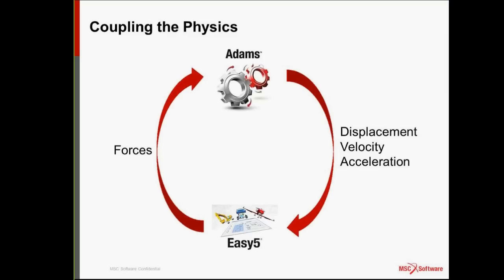Let's talk about the coupling of physics between ADAMS and EZ5. ADAMS takes in forces from EZ5 — calculated by multiplying hydraulic pressure by actuator area. Then ADAMS calculates the displacements, velocities, and accelerations of moving parts and passes those back to EZ5. In a closed-loop system like a flap, EZ5 compares actual to commanded displacement and adjusts pump flow. In a landing gear, it's more open-loop: you apply force, the gear goes up, and displacement/velocity are only used to trigger events.